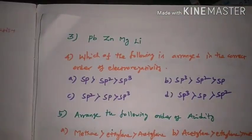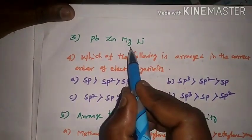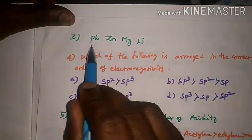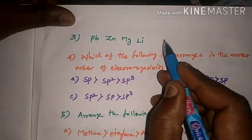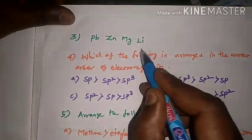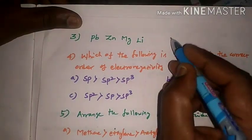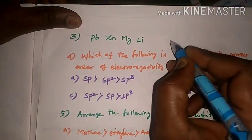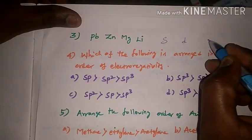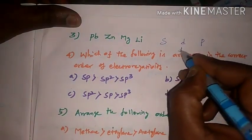The next example: Lead, Zinc, Magnesium, Lithium. These are metals. Metals have very low electronegativity. The block classification: s-block, d-block, p-block, f-block.